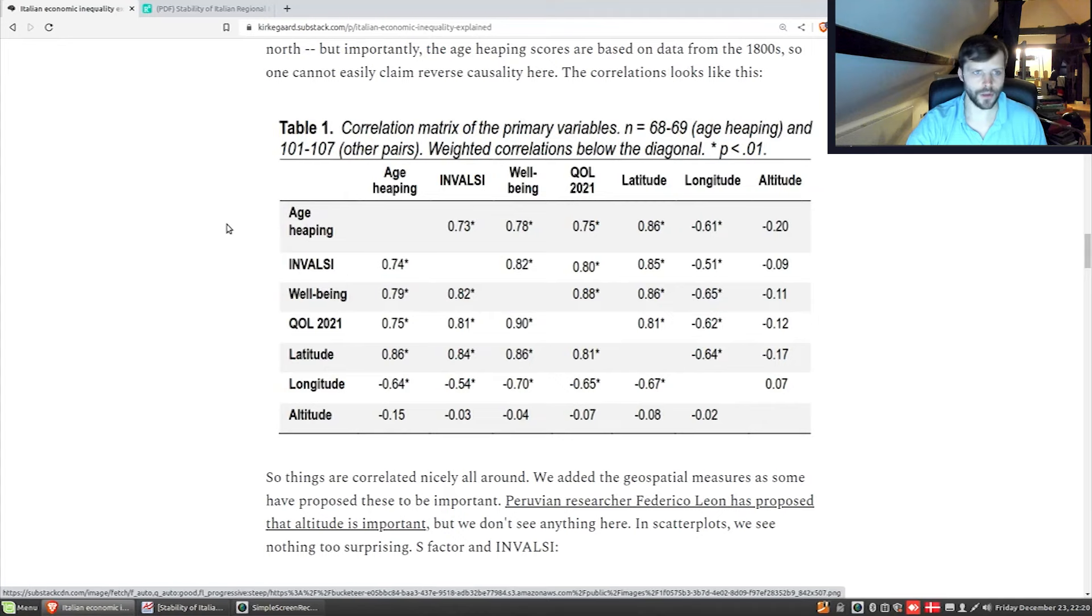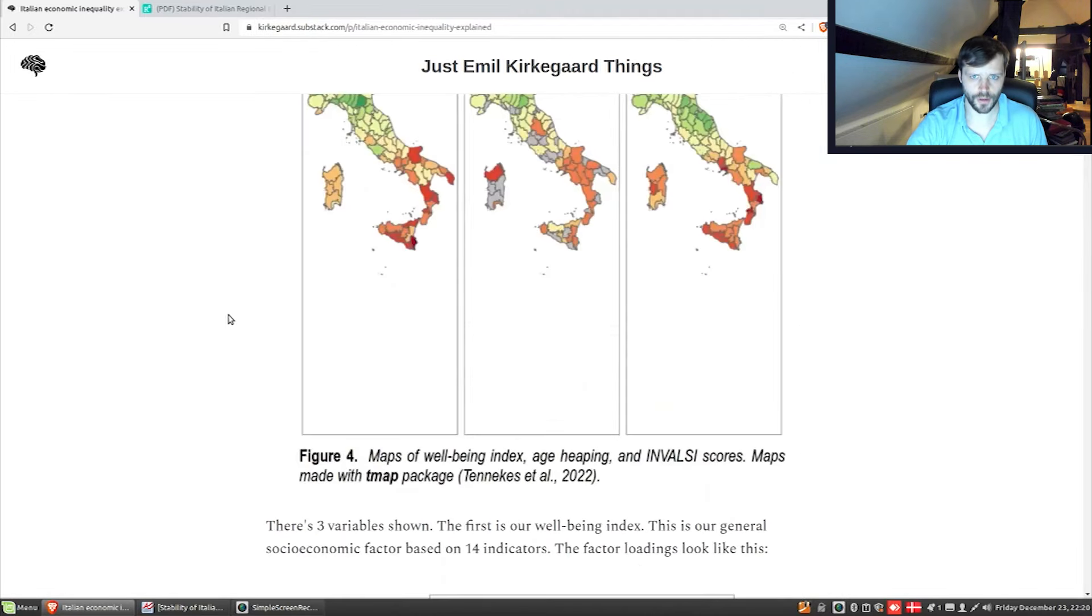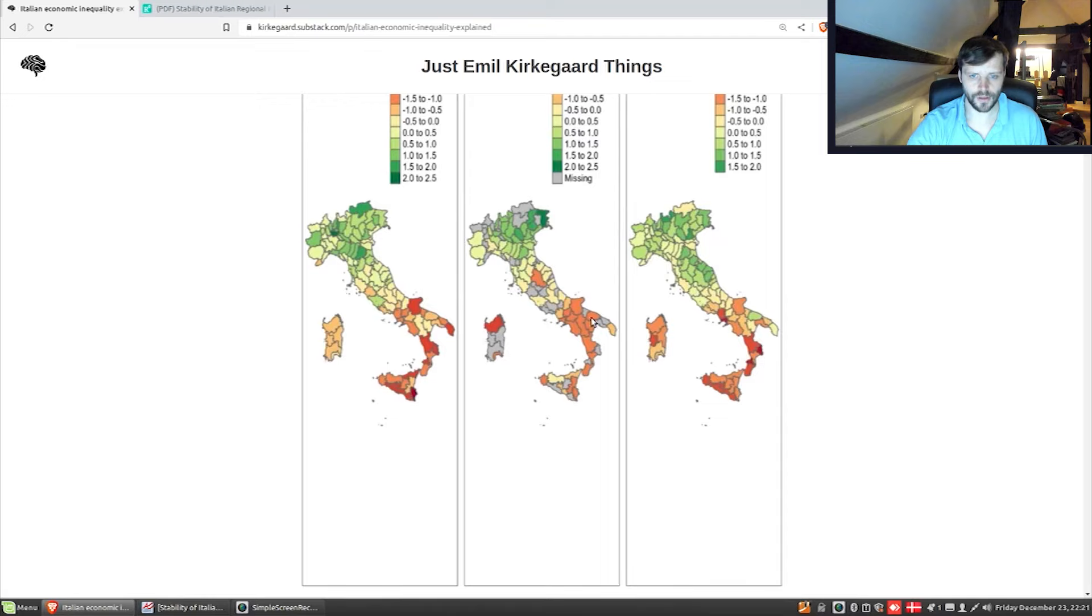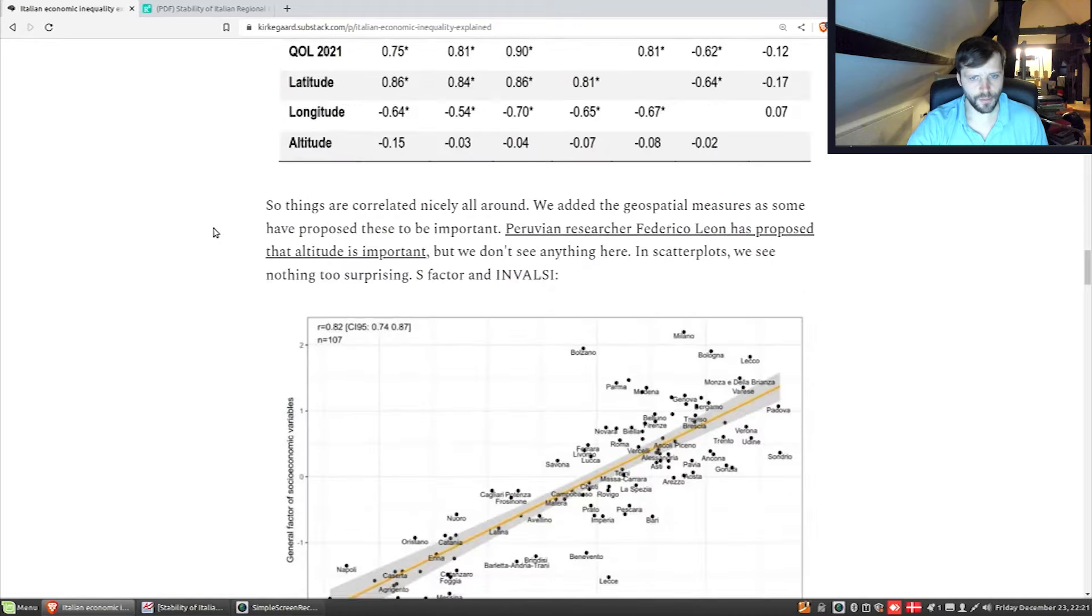There's also this other quality of life measure, which some Italians compiled, and they used a lot more indicators, but many of these indicators were things like weather and so on. We have included it here in the matrix, just if someone was interested in whether we p-hacked the S factor compared to theirs, which, as you can see, we did not. They correlate 0.9. We also see the extreme latitude correlations, which are, in fact, even stronger than these same time measures. The latitude correlations are about 0.85. It's extremely strong. There's also some longitude correlations, but as we'll see, they tend to go away. That's because longitude actually works as a proxy here, where the more eastern provinces are southern, and the more western ones are over here. Therefore, longitude tends to be a proxy for latitude indirectly.